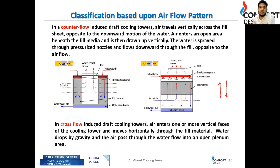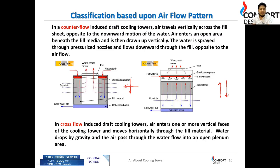In a cross flow induced draft cooling tower, air enters through one or more vertical faces. Hot water comes in from the top through a water distribution basin, while air enters from the side. The air and water flows intersect — they cut across each other rather than opposing each other — which is why it is called cross flow. A detailed study material will be shared.